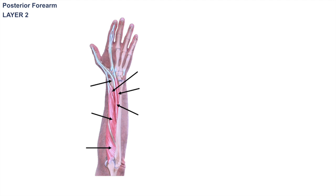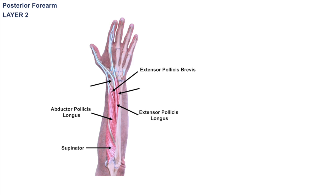Moving on to layer two of the posterior forearm, underneath all those muscles: the supinator is the first muscle, then the abductor pollicis longus, which has a tendon leading to the thumb — that's why we see "pollicis" in the name. Next is the extensor pollicis brevis, which leads to extension of the thumb; "brevis" because it is a shorter muscle. Then there is the extensor pollicis longus, a longer muscle also leading to the thumb. These two muscles — extensor pollicis brevis and extensor pollicis longus — lead to a depression in your hand when you extend it, known as the anatomic snuff box. Inside the anatomic snuff box is the scaphoid bone, which is very important and will be covered in another lesson.